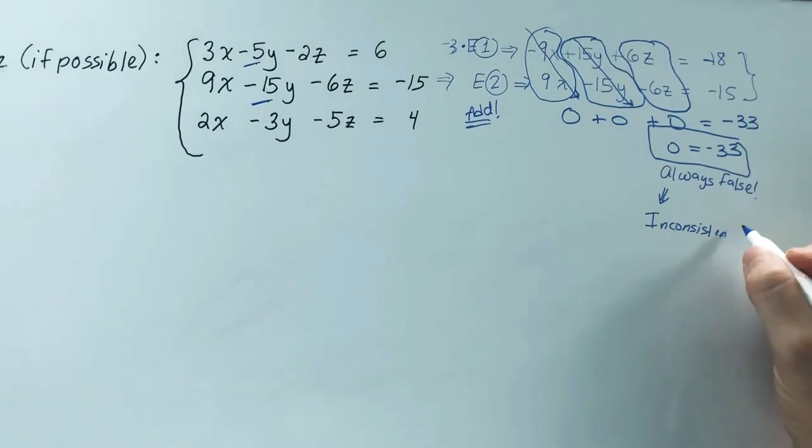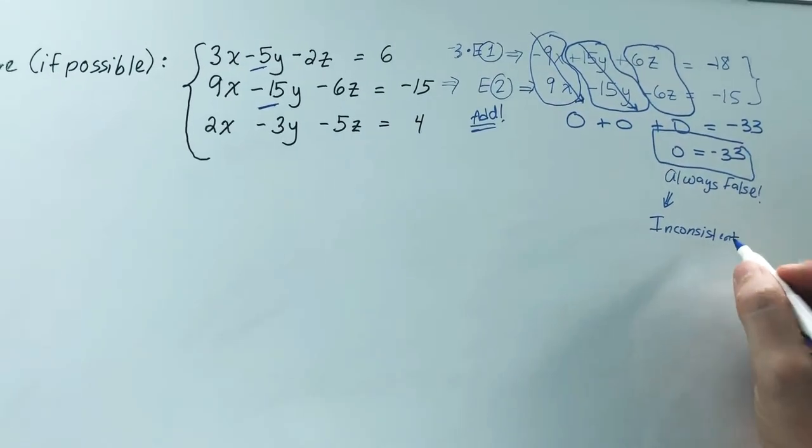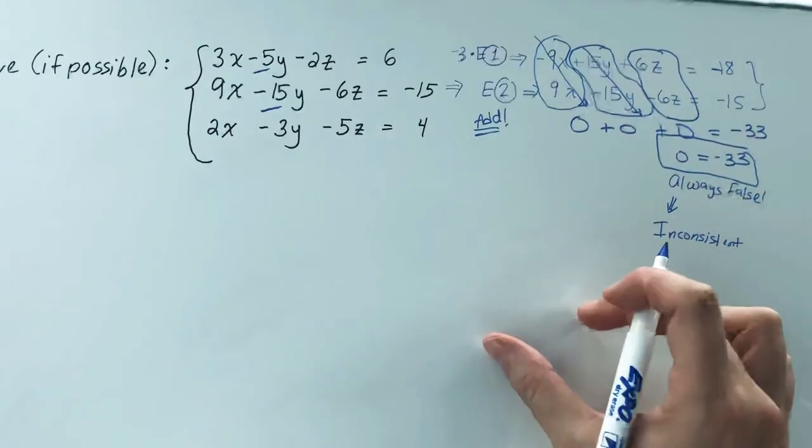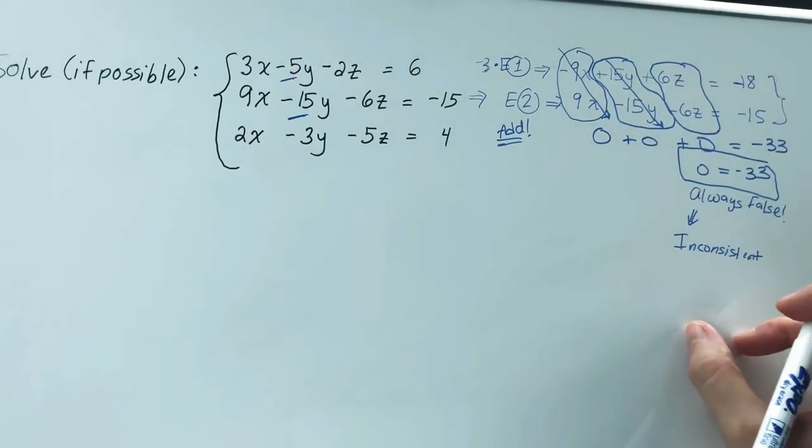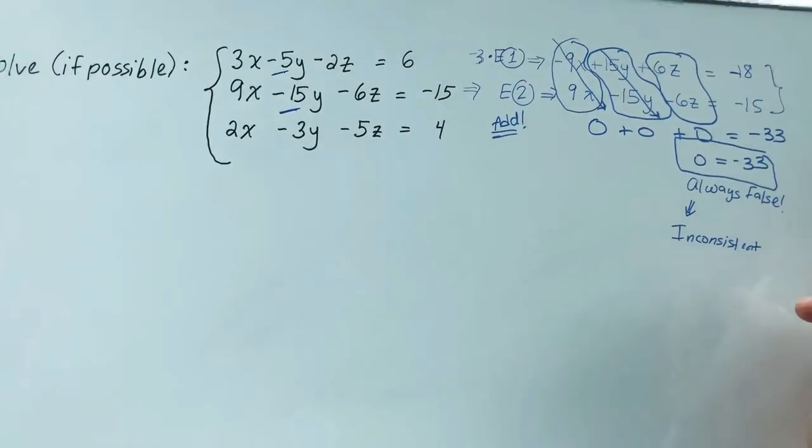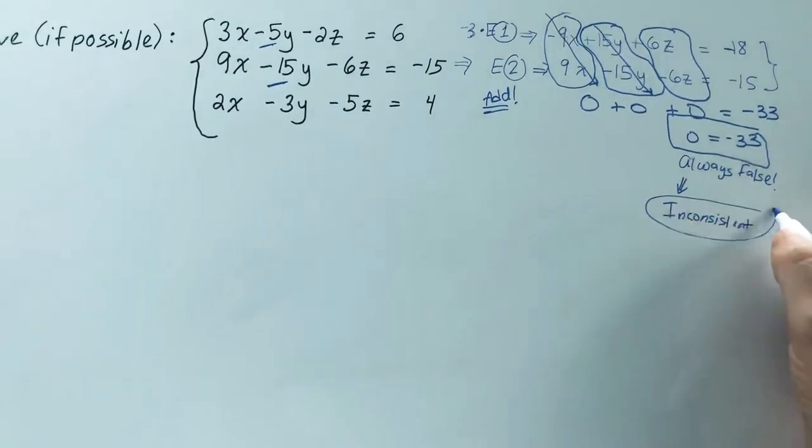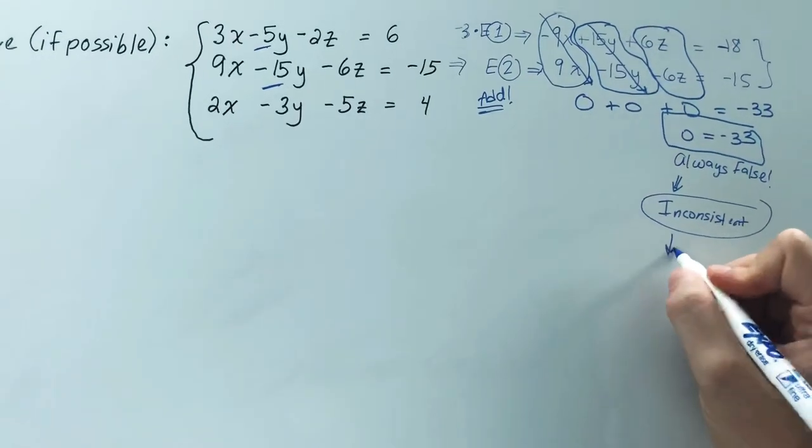Now when you're dealing with matrices later on in the unit, similarly you'll end up with a row at the very bottom typically where 0s are on one side and a number is on the other, indicating 0 equals a number, which is false. An inconsistent system has no solutions.